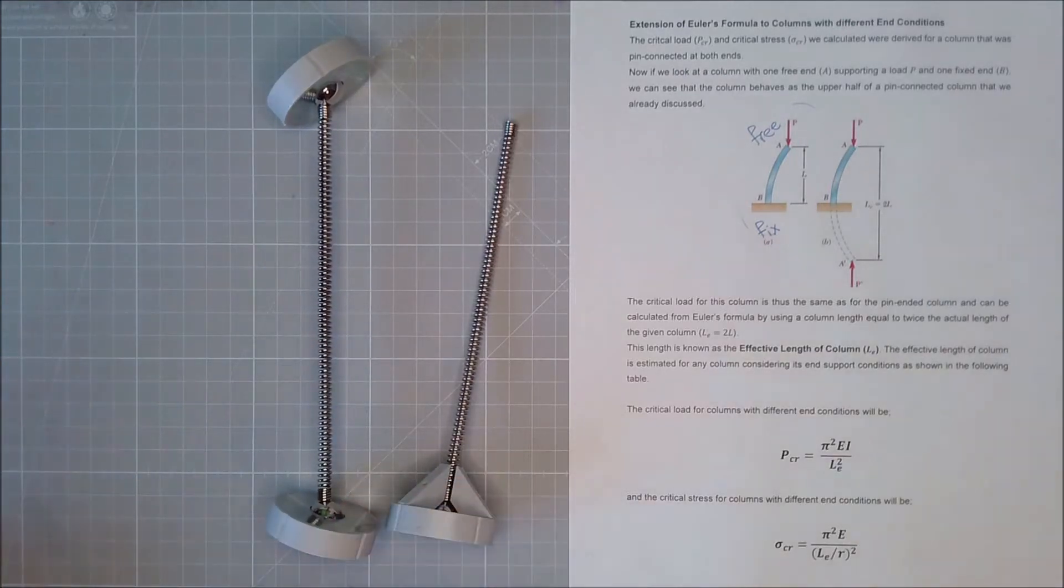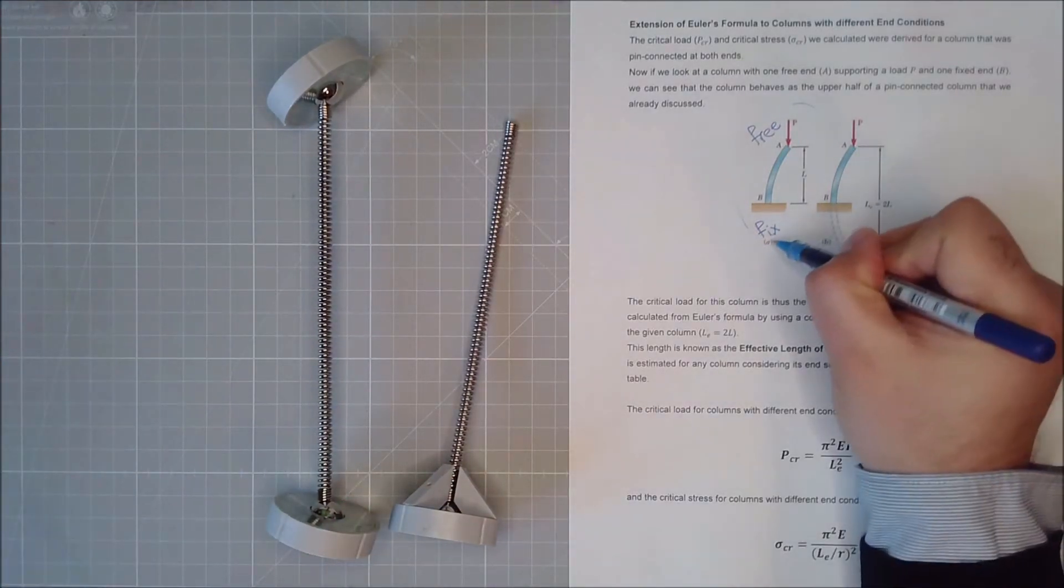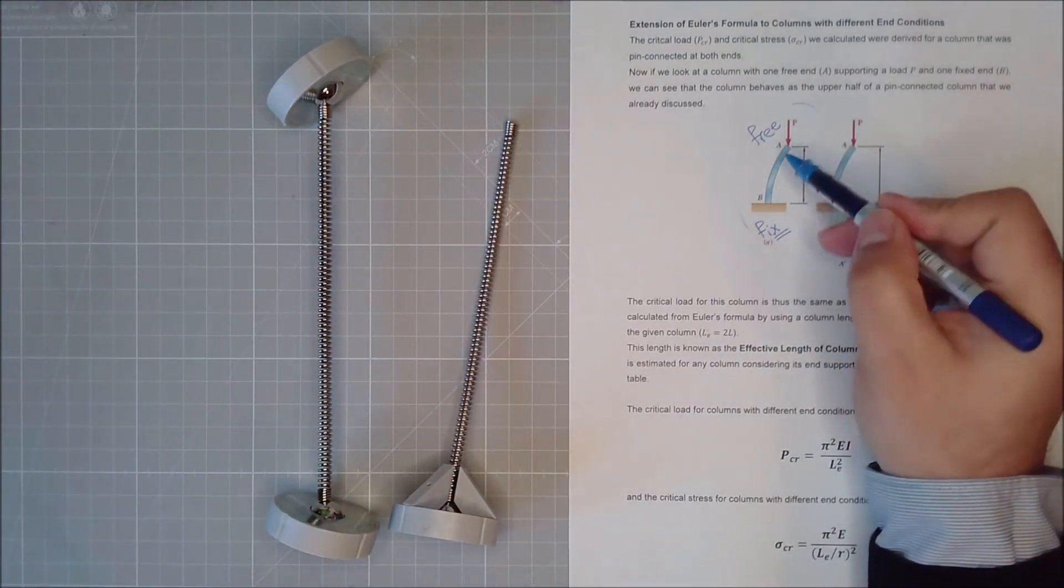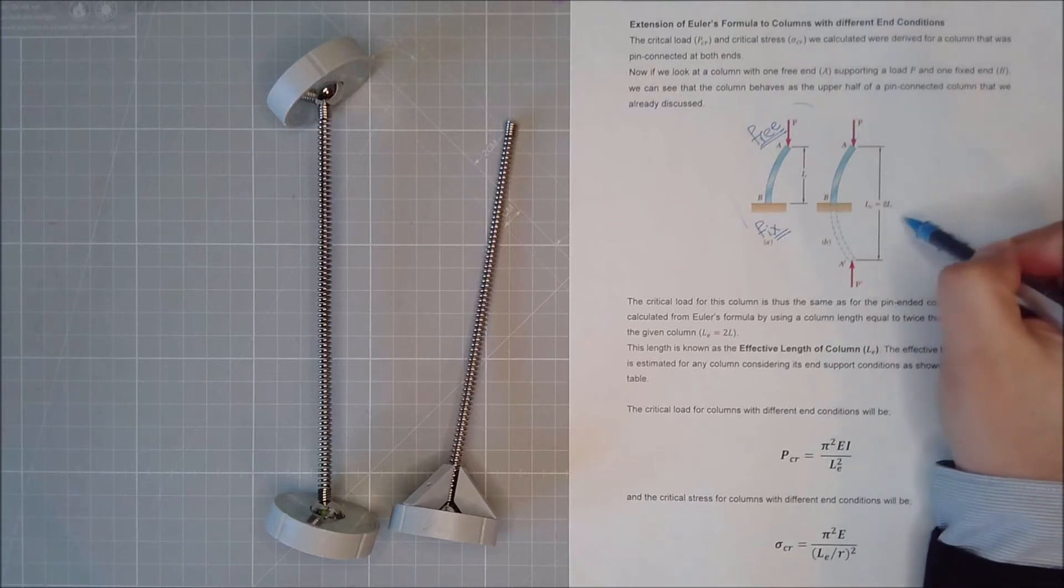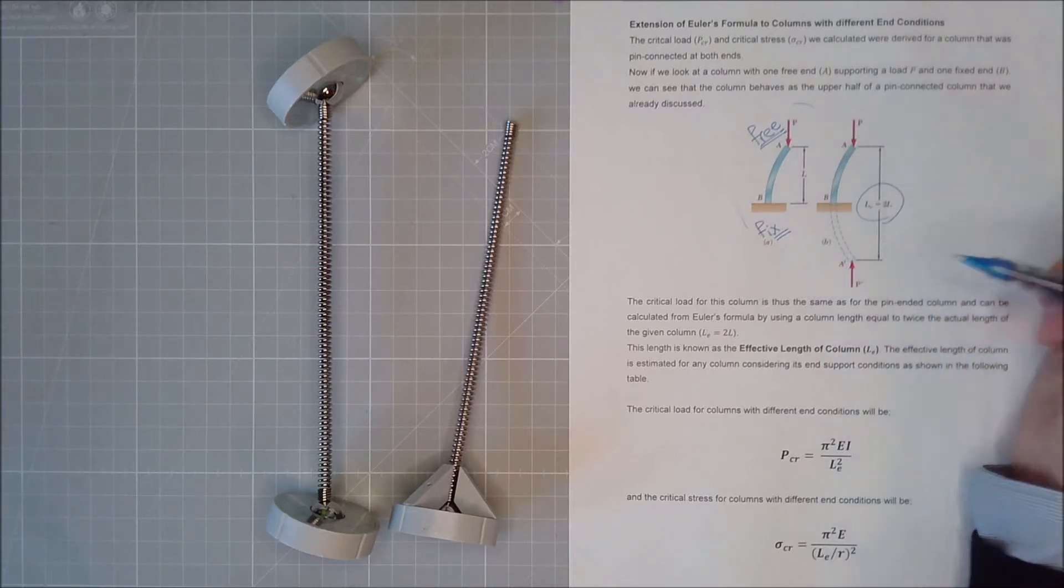Now we have done some calculations and we've seen that if I have a fixed end and a free end, the shape, the shape of this buckling is actually twice the length that I have.